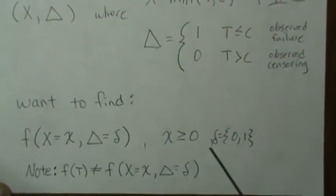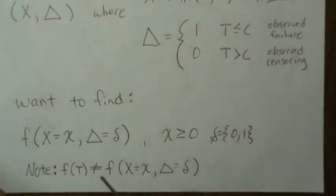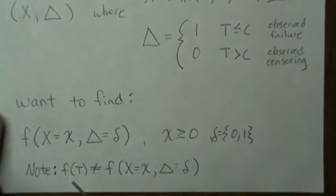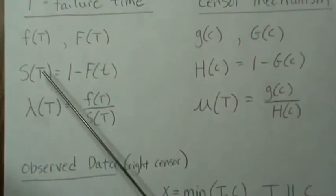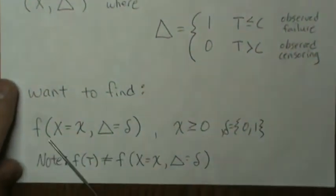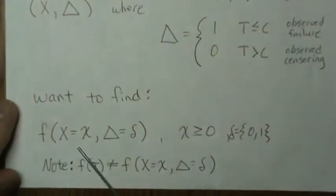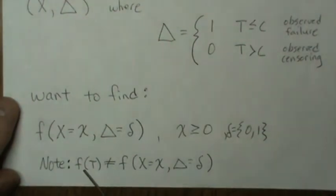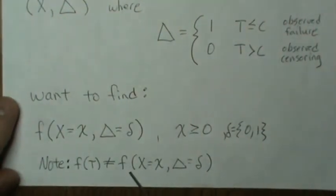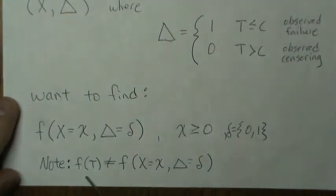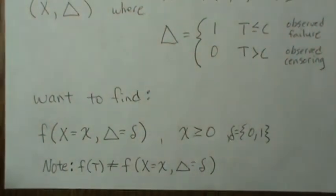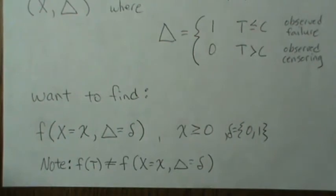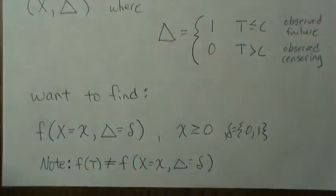So we want to find the density, which is the probability that cap X is little x and cap delta is little delta, where little x is greater than or equal to 0 and delta is 0 or 1. Note that the density for the failure times is not equal to this f for the density of our censored data. Technically, I should put a subscript T and a subscript X and delta, but I'm going to leave it off for this talk — it'll be apparent which one I'm talking about.